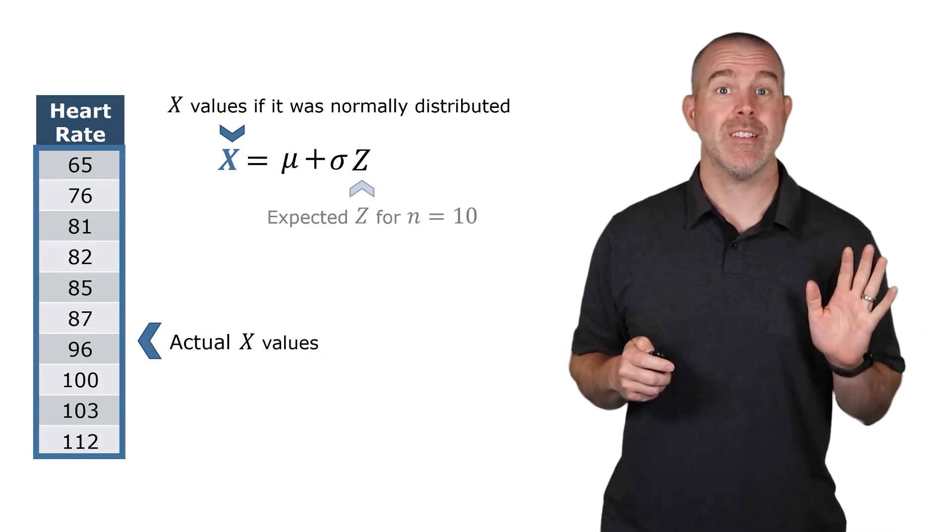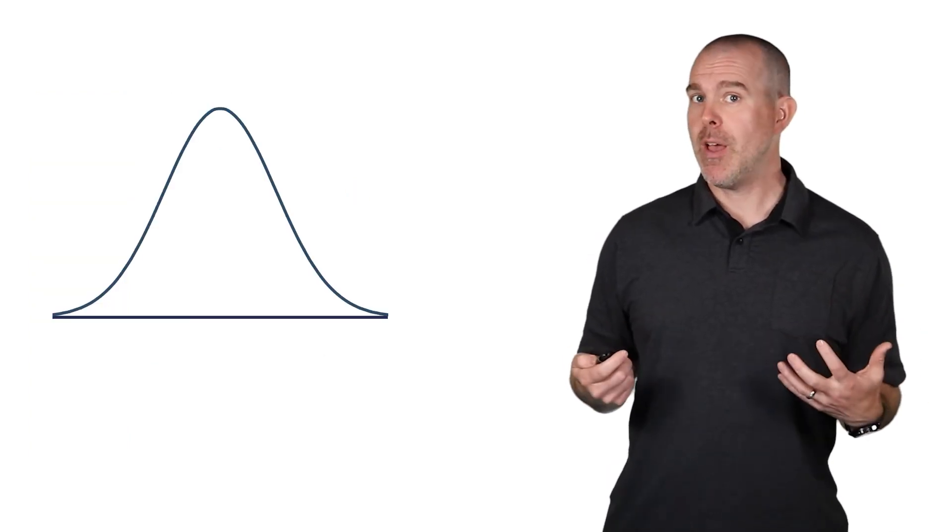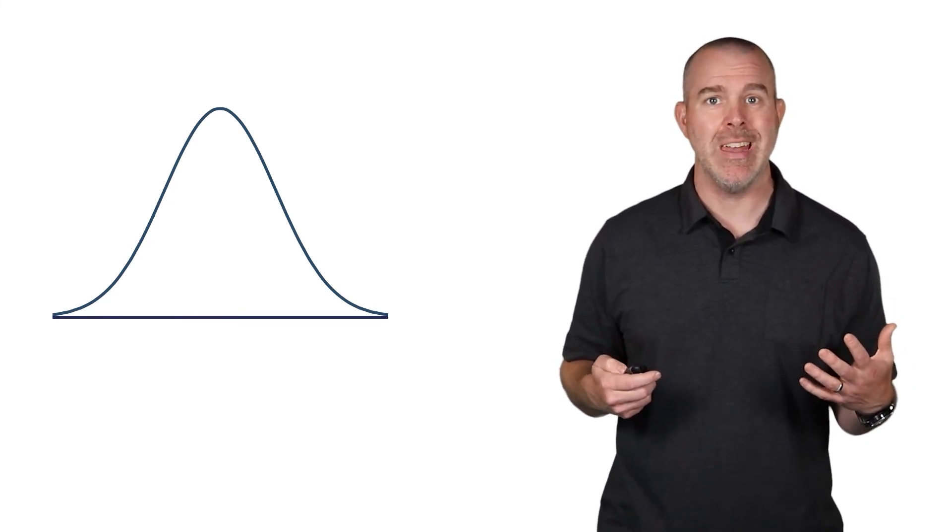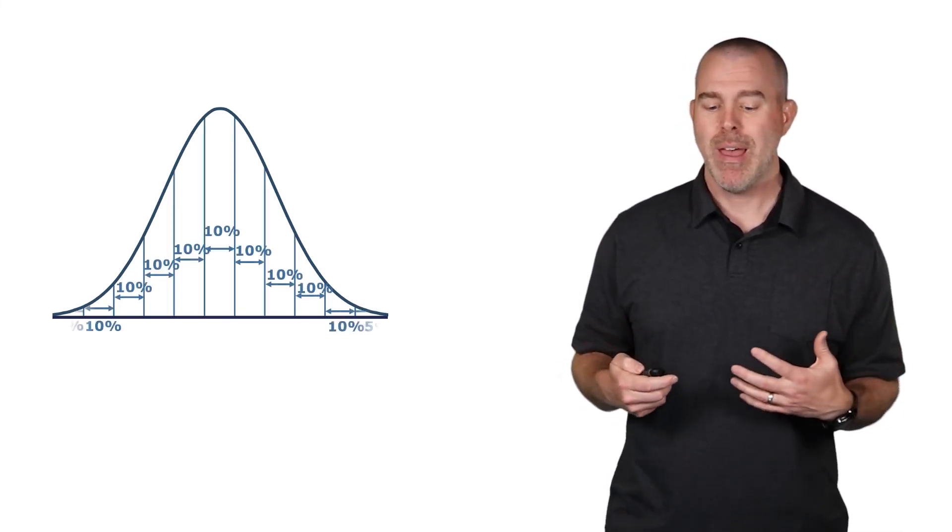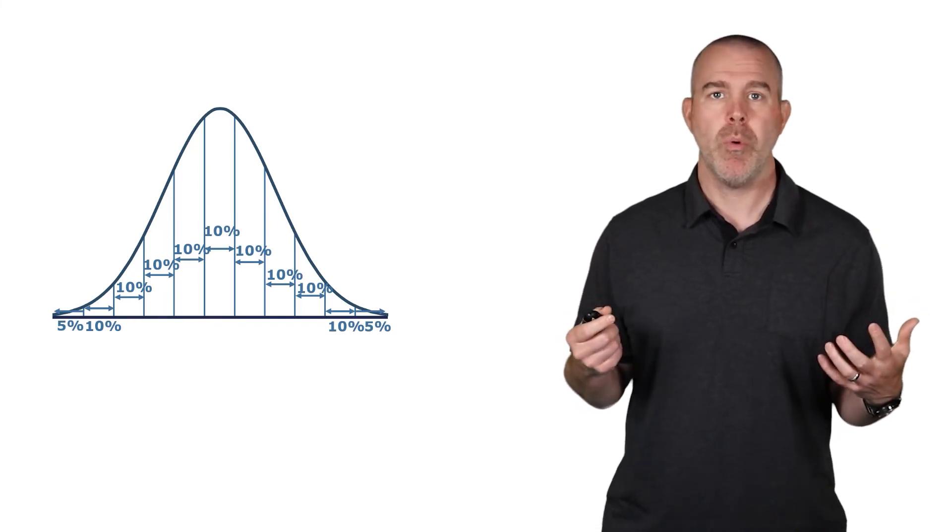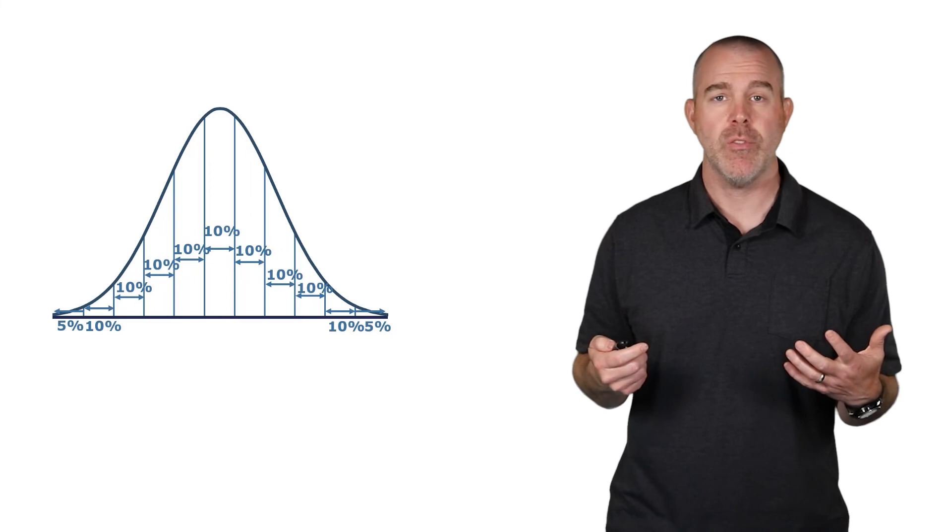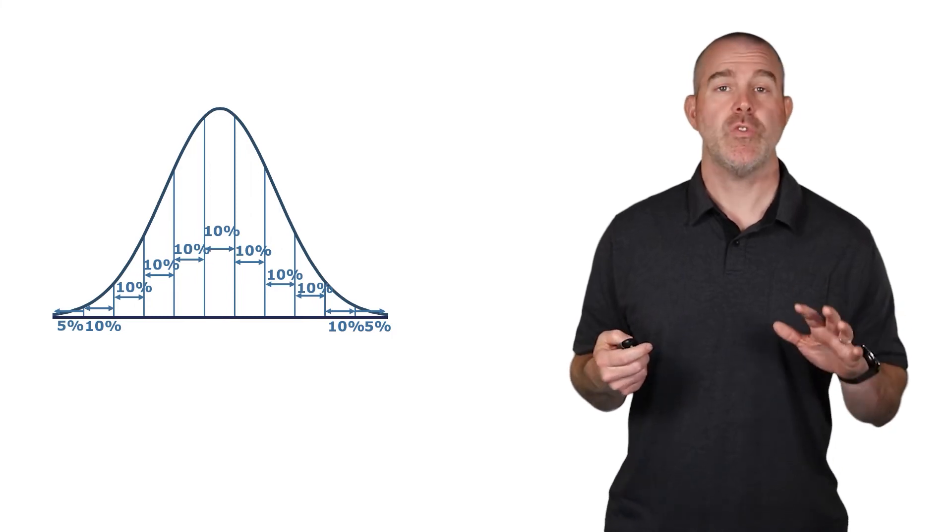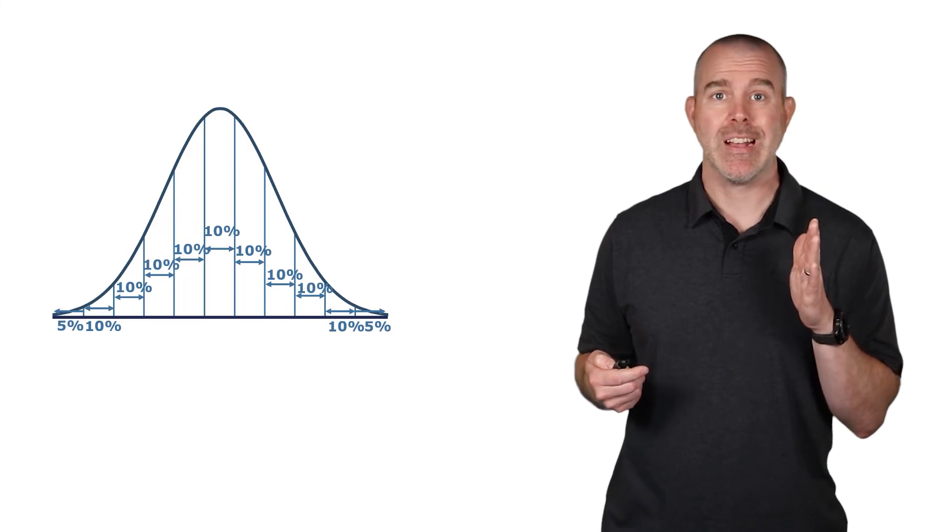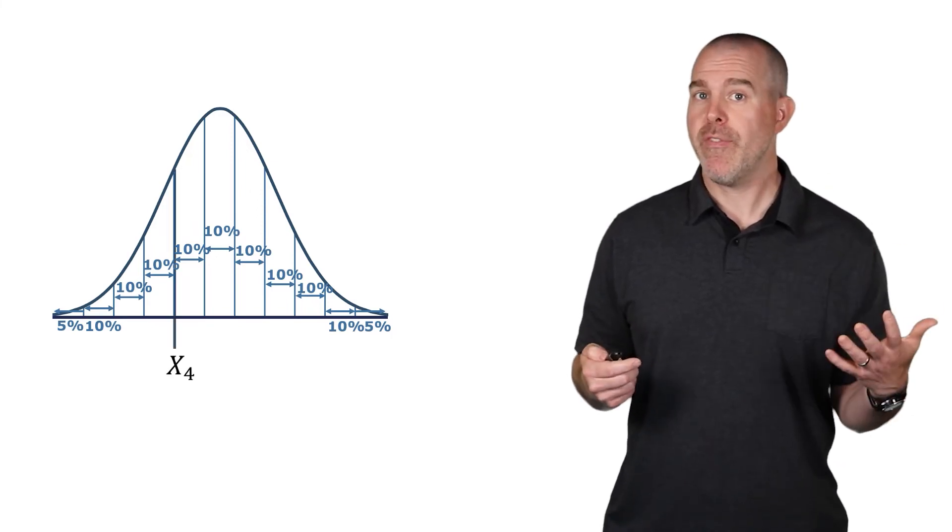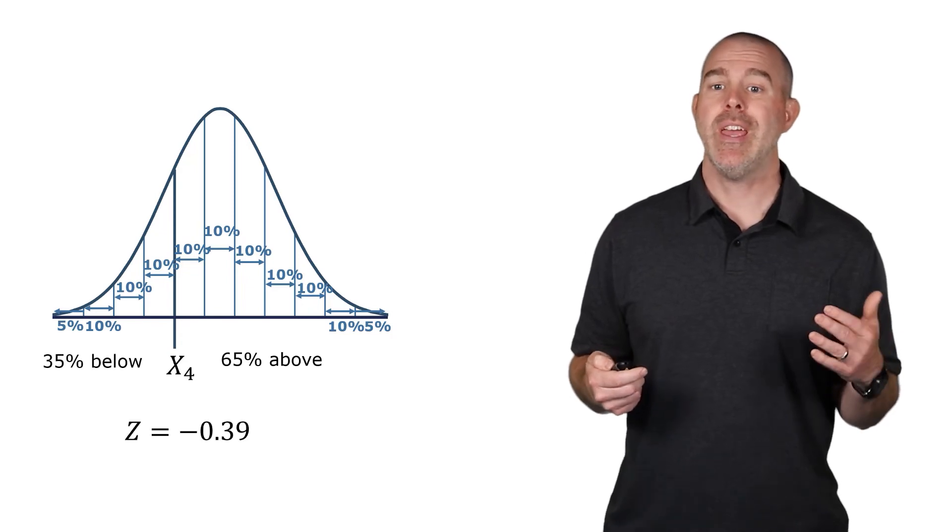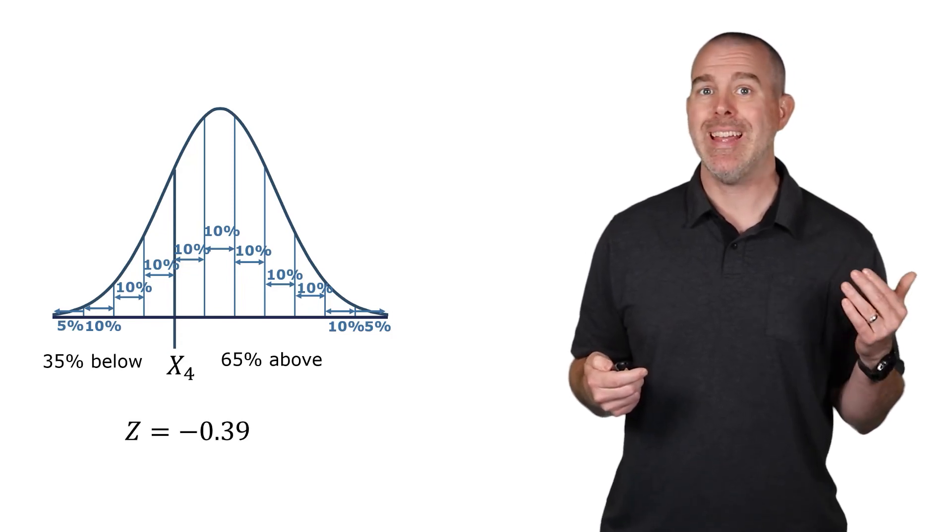All right, let's talk about how to find those expected x values. If you think about your normal curve, let's say if we have a sample size of 10, then we can break it up and have 10% in each of these intervals. And we can use the normal calculator or whatever to calculate each of those corresponding z's. Just for illustration purposes, let's say we want to find the fourth x. Well, there should be 35% below and 65% above. And then we can use that to find the corresponding z.